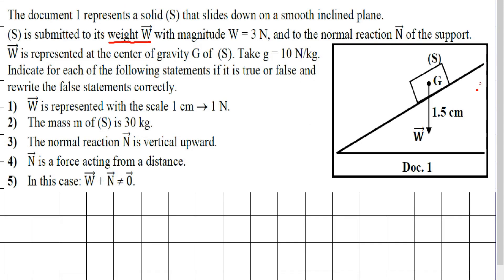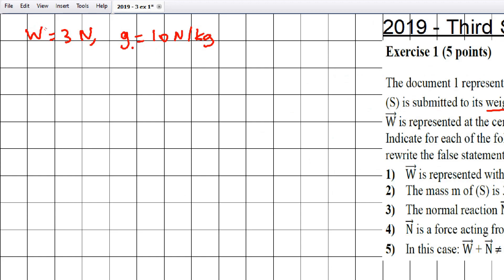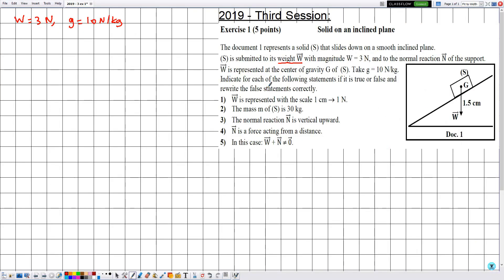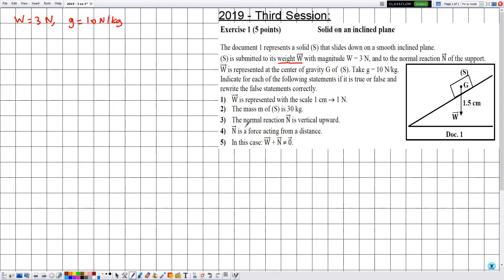G is equal to 10 newtons per kilogram. In document one, the solid S is on the inclined plane, W is represented, and the length of this vector is given as 1.5 centimeters, with the point of application G. Knowing the weight and the gravitational field strength, we can determine the mass. Now we need to indicate for each statement if it's true or false, and rewrite the false ones correctly — every answer must be justified.